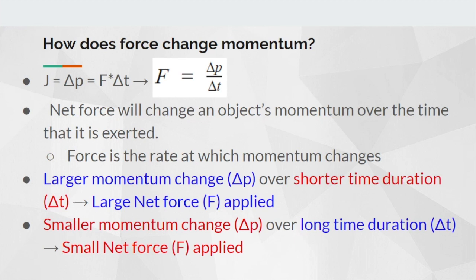The gist of this is that a bigger momentum change over a smaller period of time means a huge net force. We can see that in our equation — delta P is on top and delta T is on the bottom. So the bigger the momentum and the smaller the time, the bigger the net force.